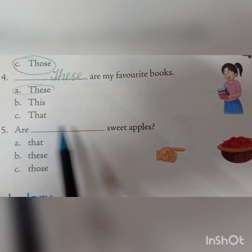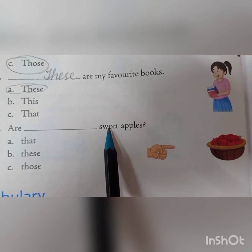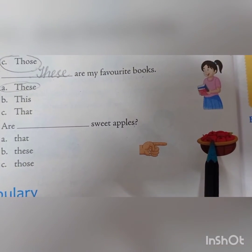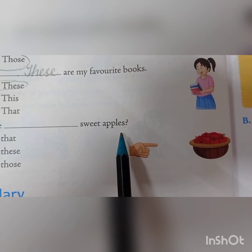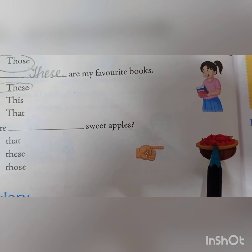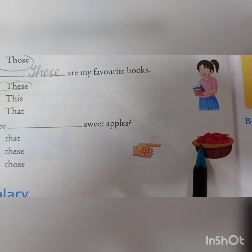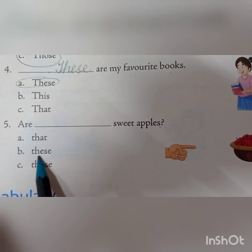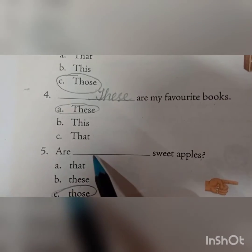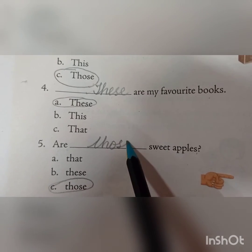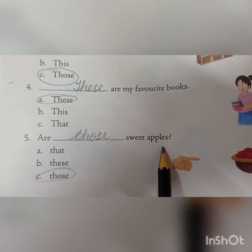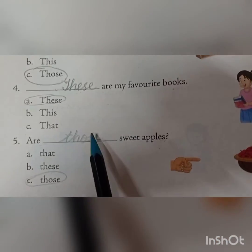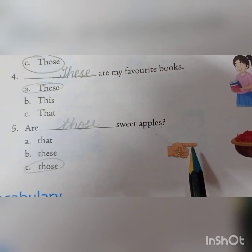Number five: a basket is full of apples. The sentence is: blank space — sweet apples. Apples are plural and far, so we use 'those'. Those are sweet apples. Review: Those are Namita's shoes. These are my favorite books. Those are sweet apples. Clear, children?